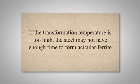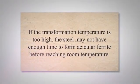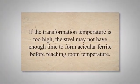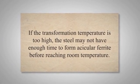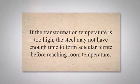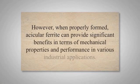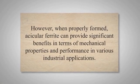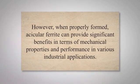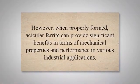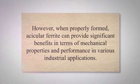Finally, the transformation temperature is another important factor in the formation of acicular ferrite. This is the temperature at which austenite transforms into ferrite or other microstructures. If the transformation temperature is too high, the steel may not have enough time to form acicular ferrite before reaching room temperature. Overall, the formation of acicular ferrite is a complex process that requires careful control of several variables. However, when properly formed, acicular ferrite can provide significant benefits in terms of mechanical properties and performance in various industrial applications.